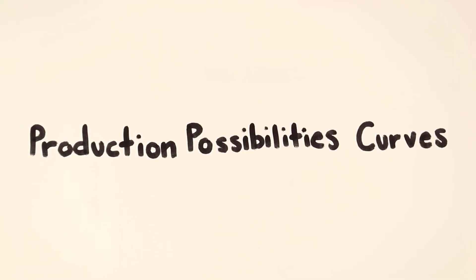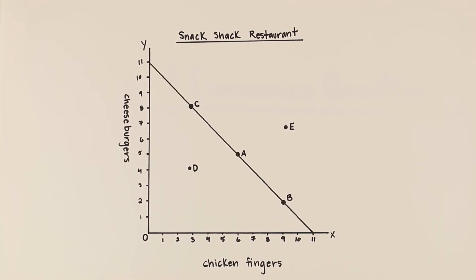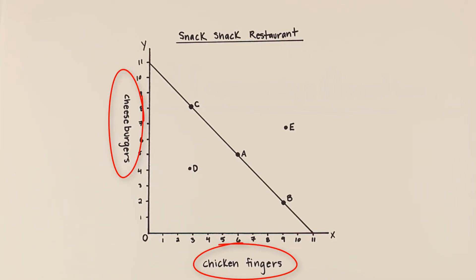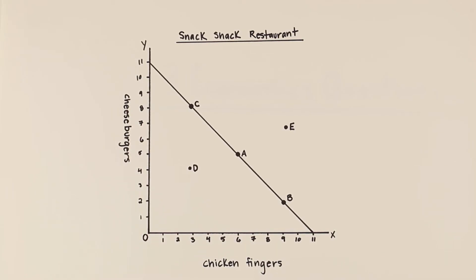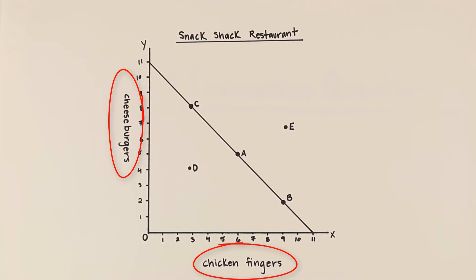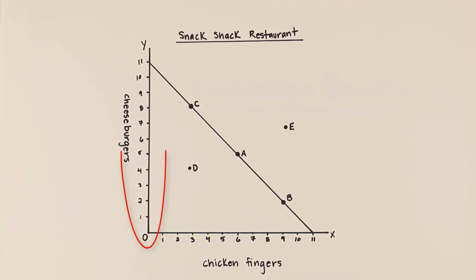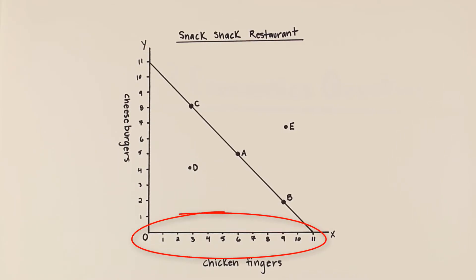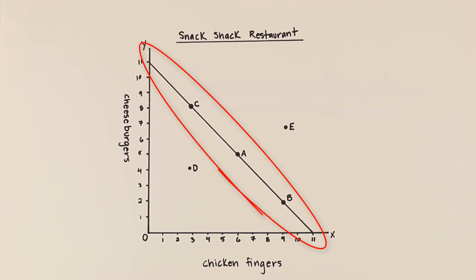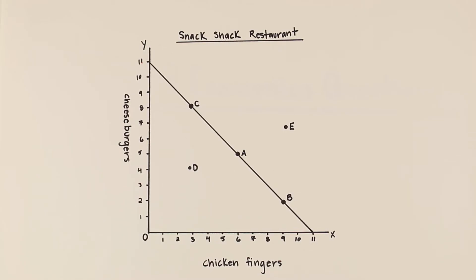Now we will learn about production possibilities curves. Production possibilities curves show you the amount of two products you can make at the same time. This production possibilities curve uses a restaurant as an example, showing the amount of cheeseburgers and chicken fingers the restaurant can cook at the same time. The potential number of cheeseburgers is on the y-axis, and the potential number of chicken fingers is on the x-axis.